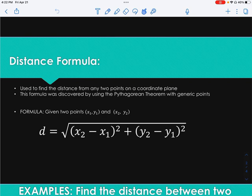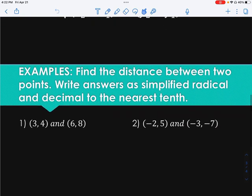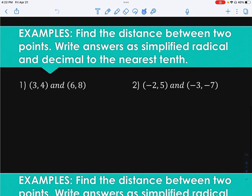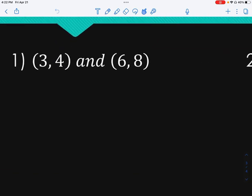In other words, you take your two x values, you subtract them, and then you square it. You take the two y values, subtract them, and then square it, add those two together, and then take the square root of that. So that is basically it for the distance formula. What we are going to do today is find the distance between two points. We are going to write our answers as simplified radical and decimal to the nearest tenth if needed.